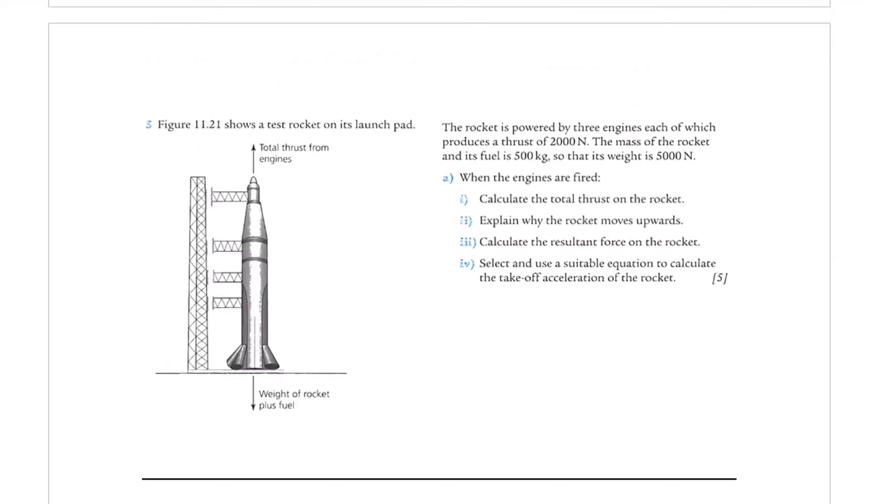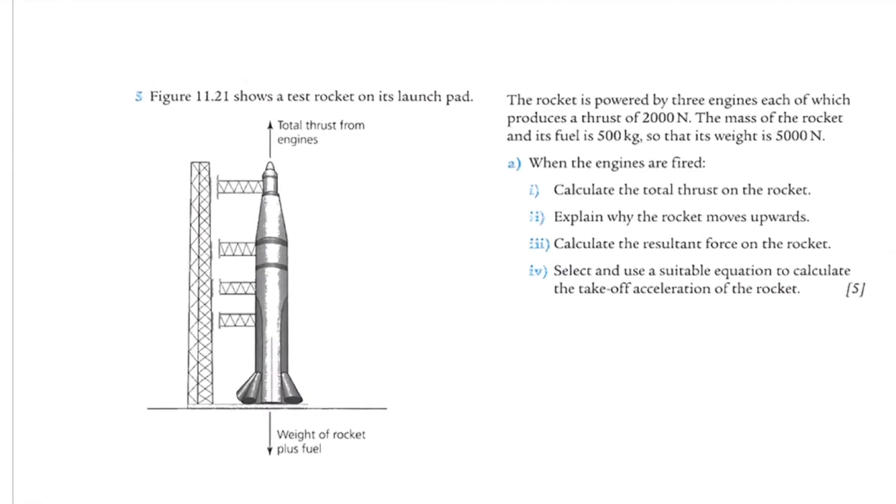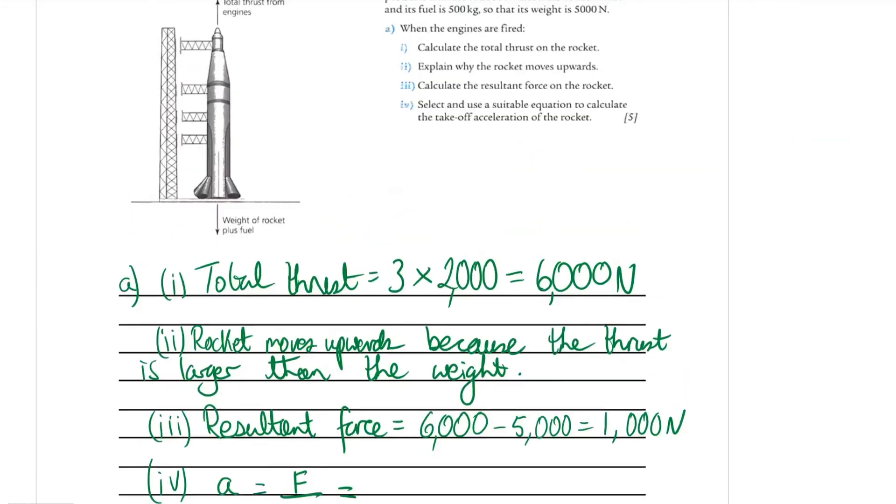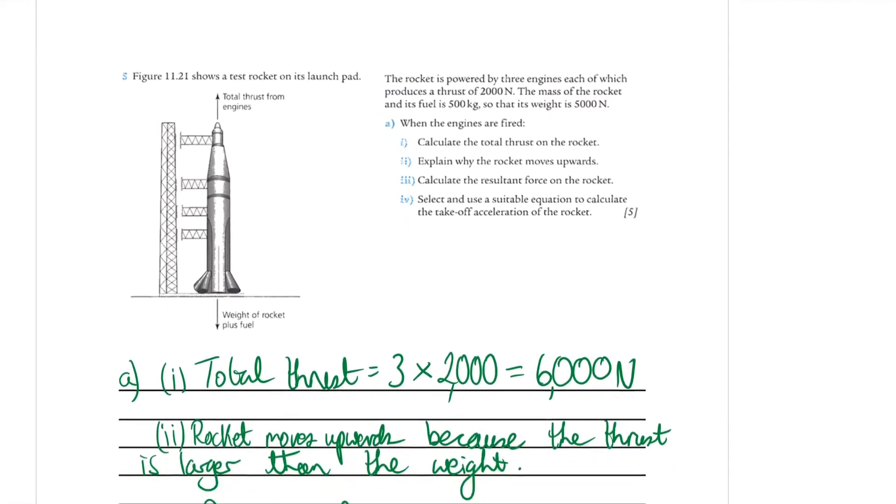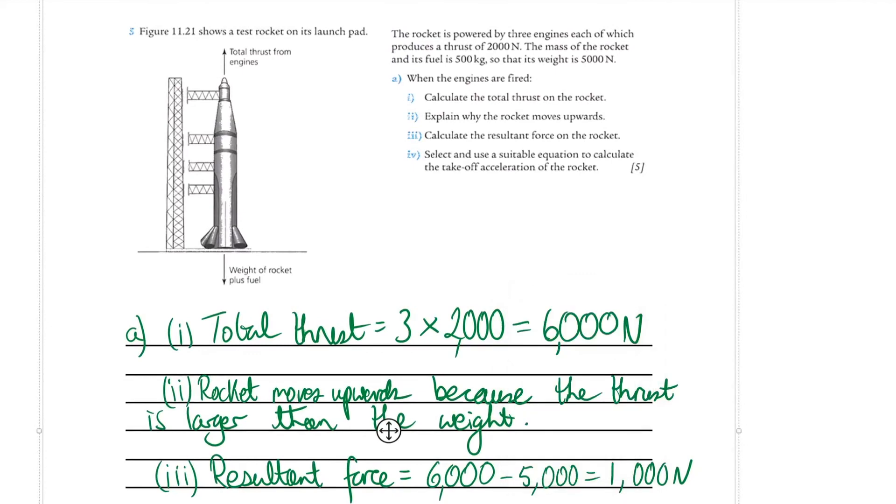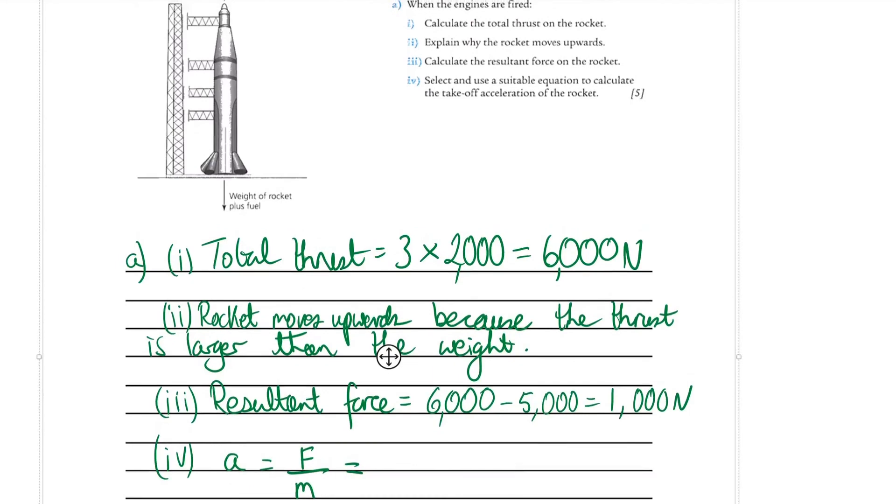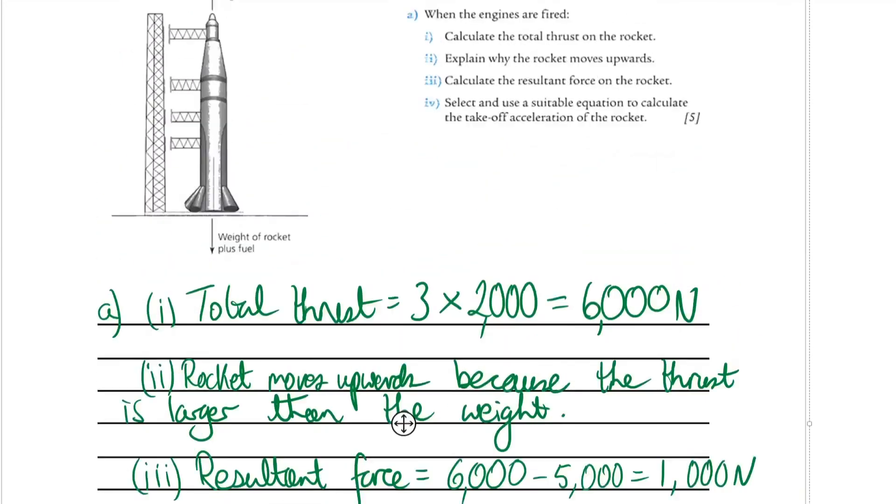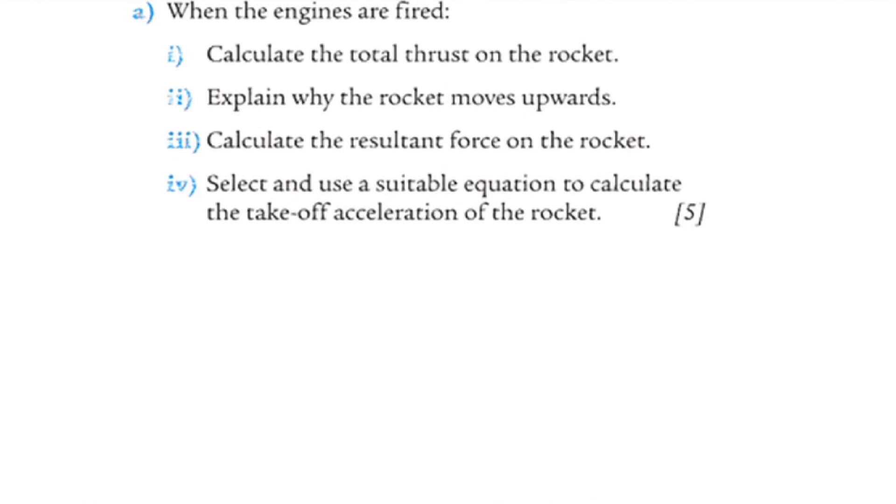Then you've got this question on a rocket. I'll do this one with you for higher tier. I started answering that question. I'm not going to read through it all, I'm sure you can make sense of it. It just asks what's the total thrust? Well, three times the thrust of each engine, 6,000. Rocket moves upwards because the thrust acting upwards is larger than the weight acting downwards. And what's the resulting force? Well it's 6,000 take away 5,000. 6,000 is thrust acting up, 5,000 is the weight acting down. The resulting force is 1,000. So the final part of the question asks, select and use a suitable equation and calculate the take-off acceleration of the rocket.